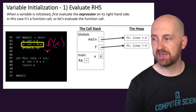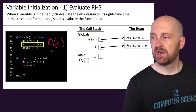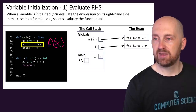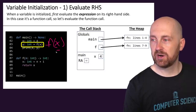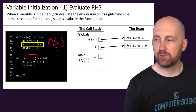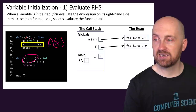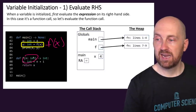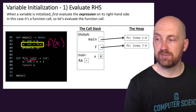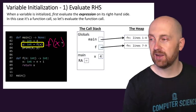When we have a function call expression, we follow a sequence of steps. Does the function name f exist? Yes, it does. Do the parameter types match up in number and type? There's one argument, x, whose type is int, and one parameter defined on the f function whose type is int. So that checks out.